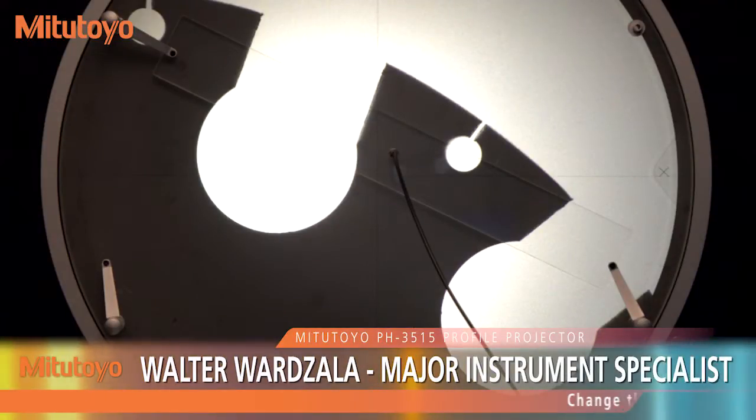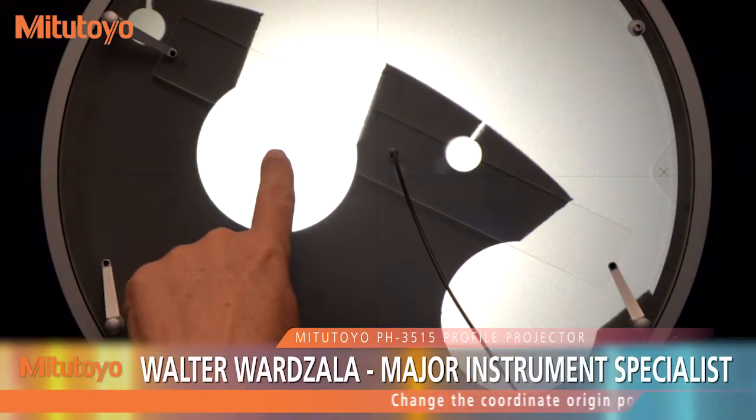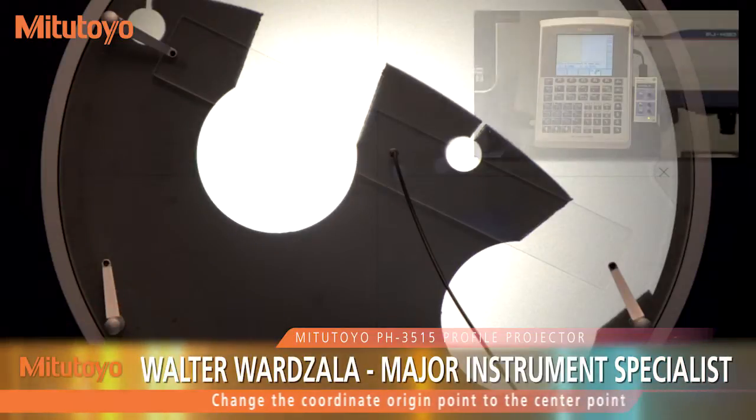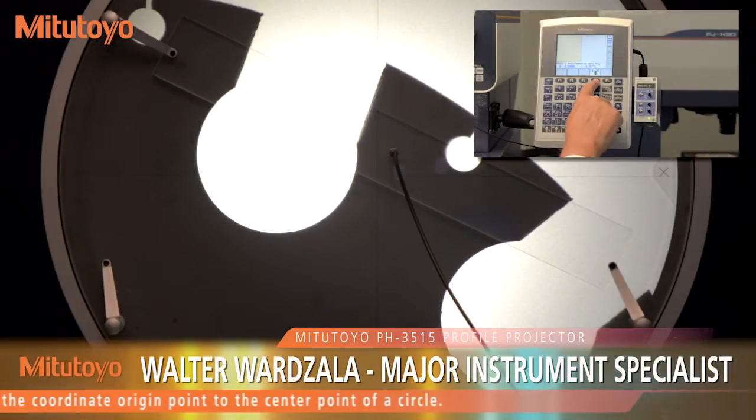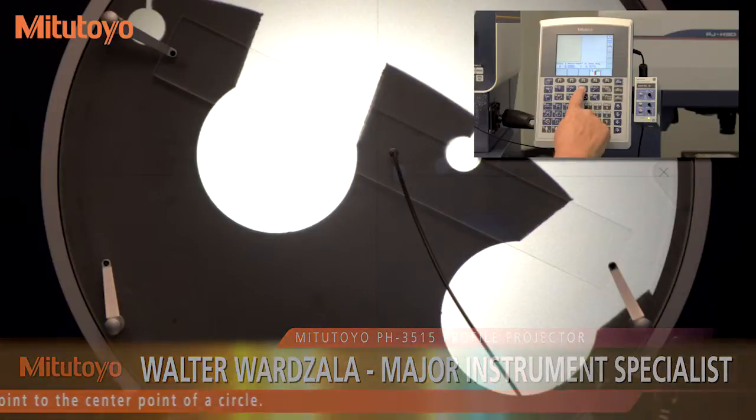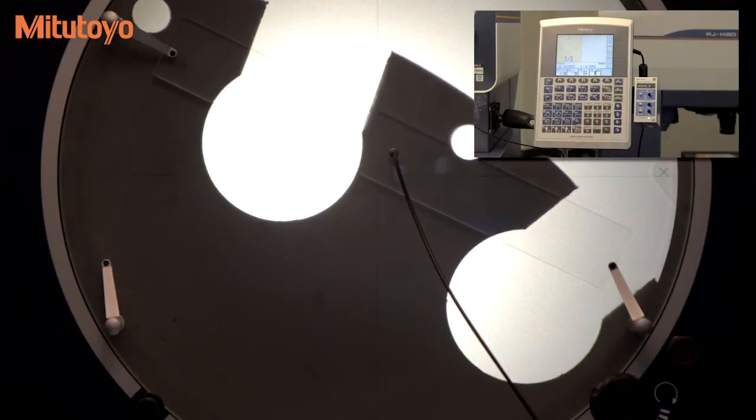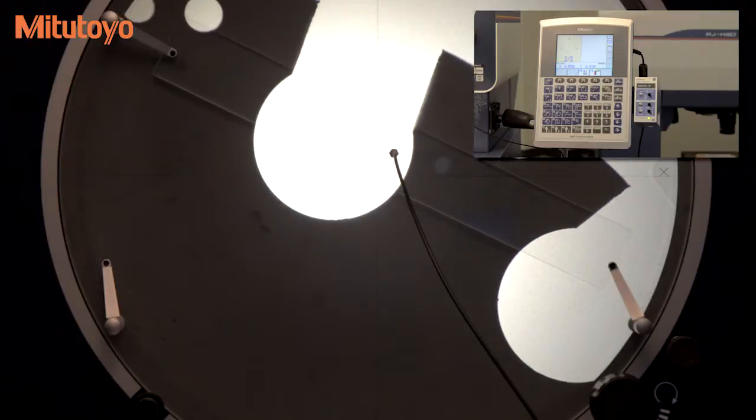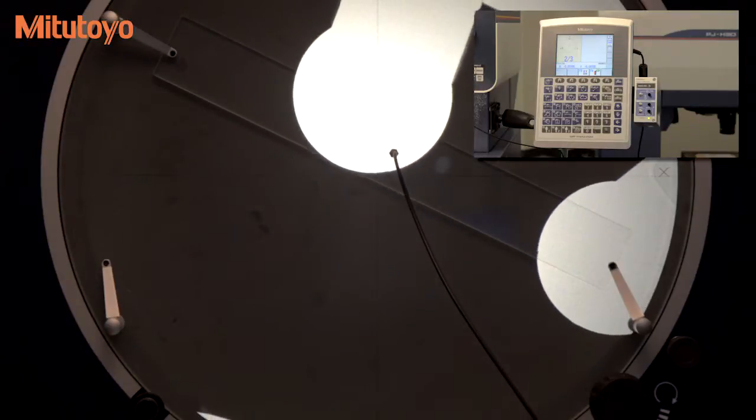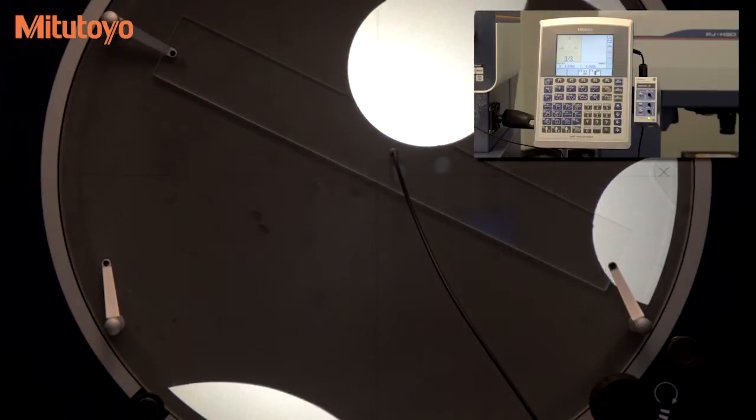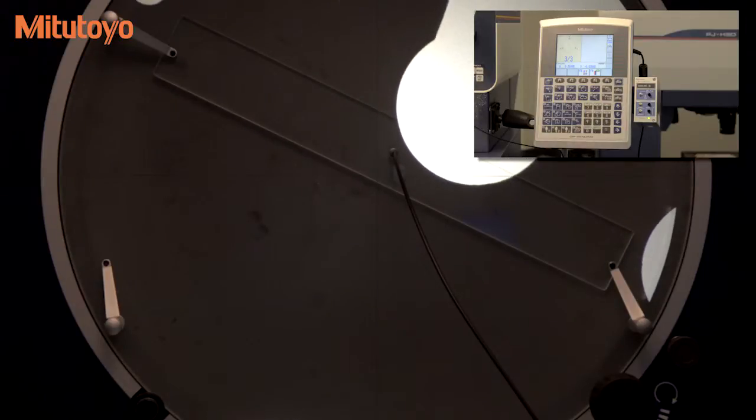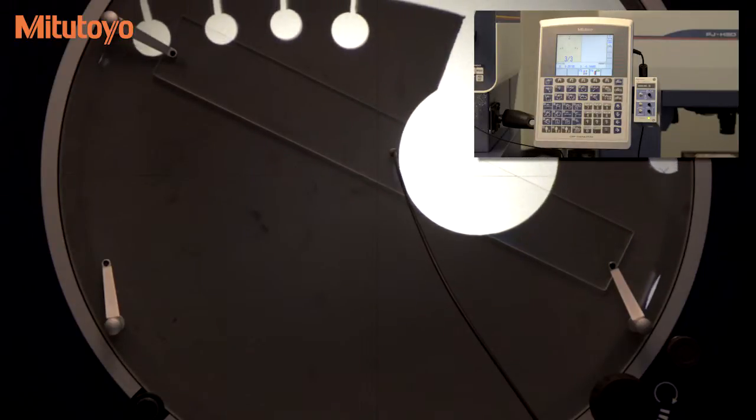To align a coordinate system to your part, rather than having to align the part to the coordinate system, use the basic commands to find the point or angle or line that you want to use to align your new origin. Here we find the center of a circle to use as our new origin. Select the method to use to move the origin, just simple X and Y position in this example.